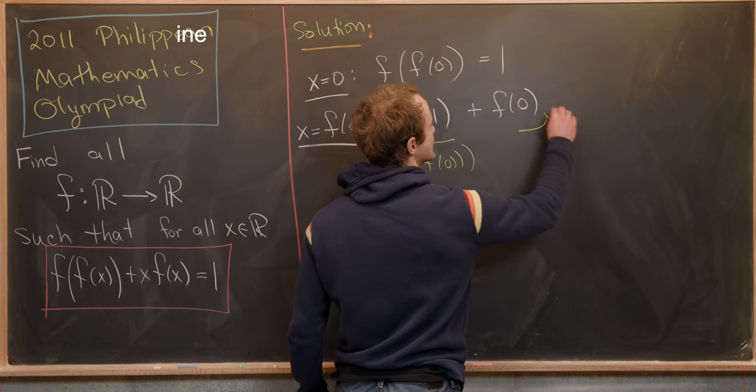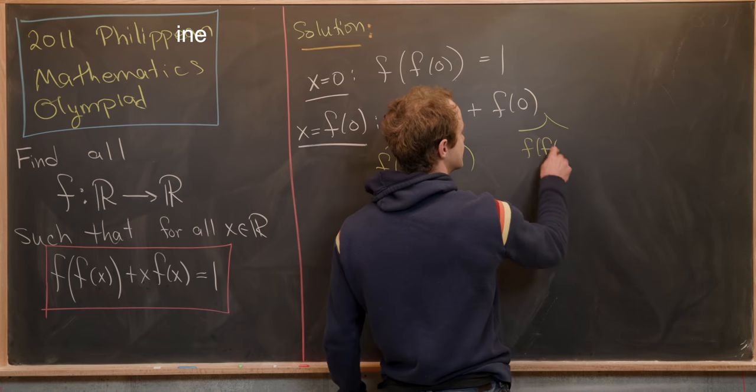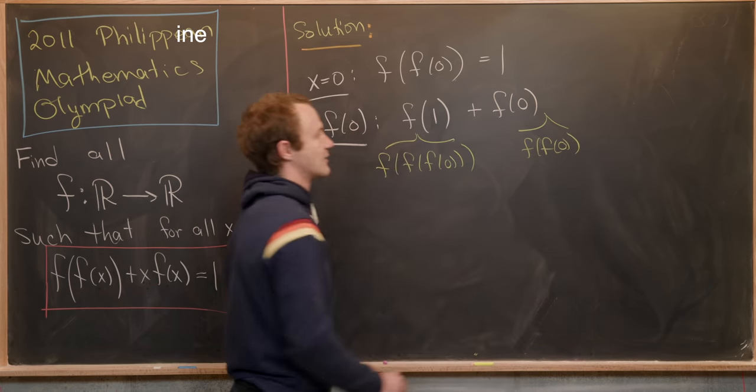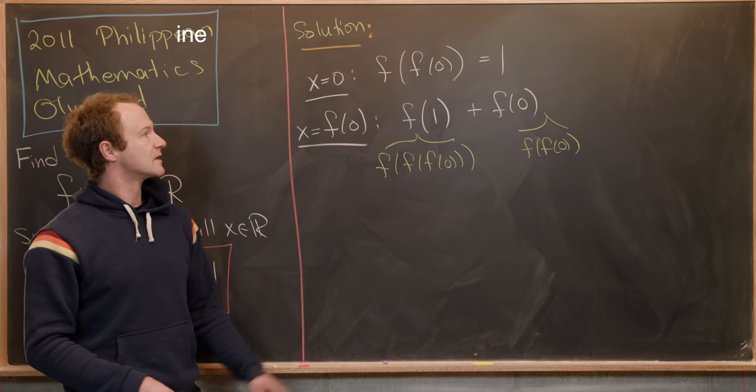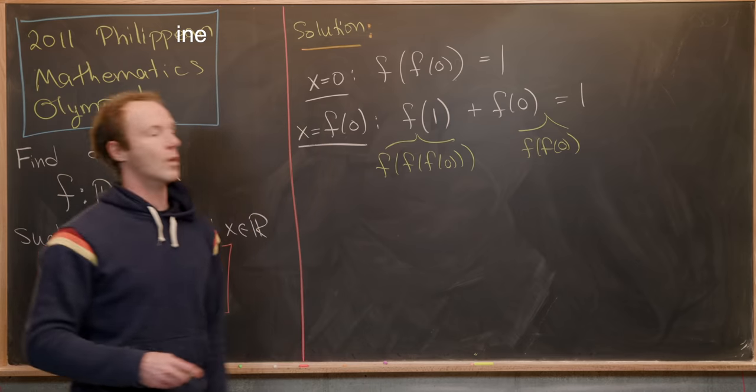And keep in mind that this 1, which is hidden right here, is actually f(f(0)). And we know that value from our first step. Okay, so next, we know that this is equal to the number 1.